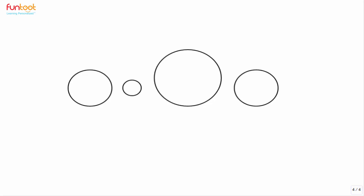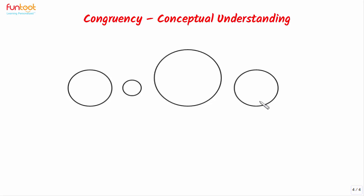Let's take one more example of two dimensional objects. Here we can see some circles and we have to pick the circles which are congruent. If the radii of two circles are equal, they will be able to cover each other completely. So for two circles to be congruent, their radii should be the same. We can conclude: if the radii of two circles are the same, then the circles are congruent.